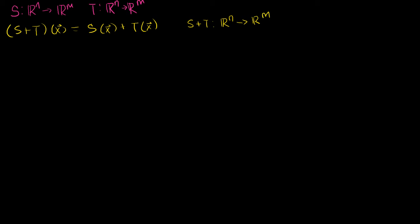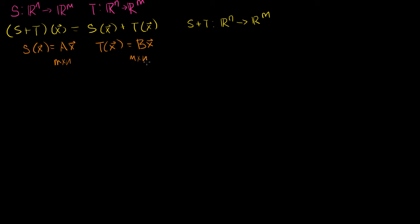Every linear transformation can be represented as a matrix. We can say that S of X equals some matrix A times X, and T of X equals some matrix B times X. Both A and B are m by n matrices, because these are both mappings from Rn to Rm.